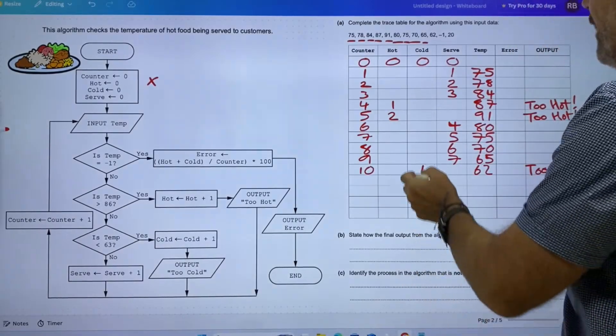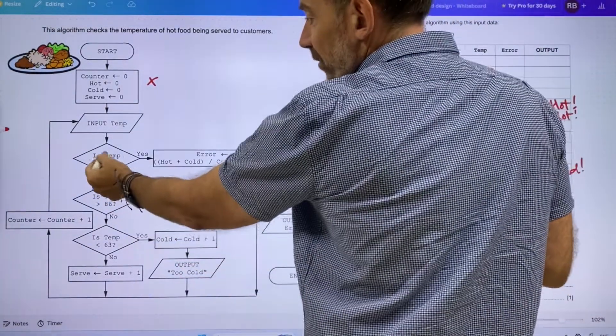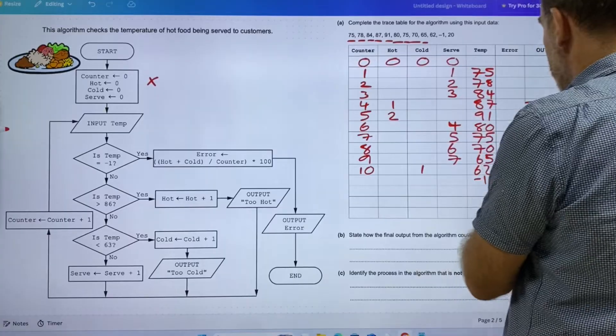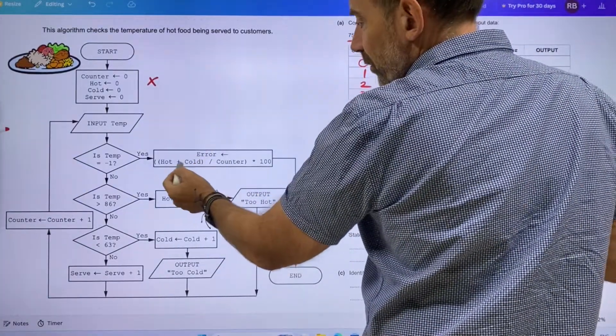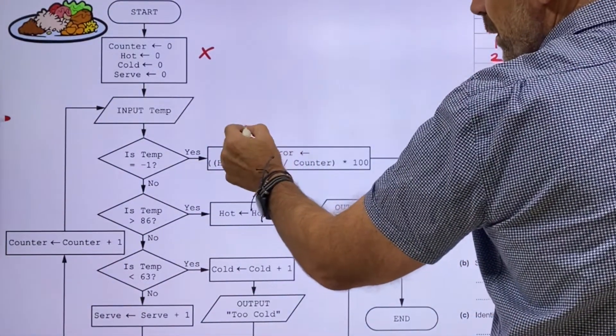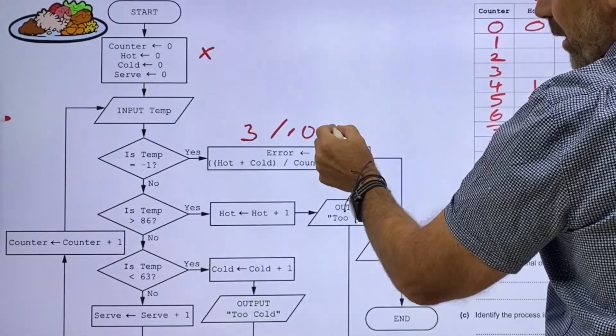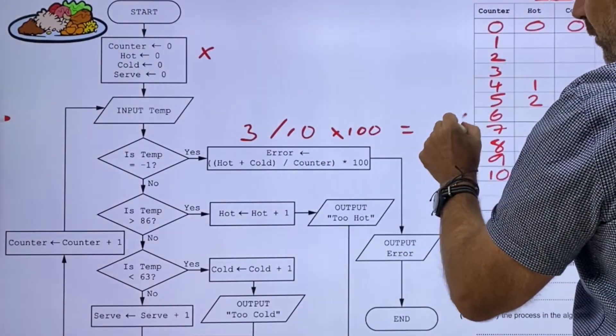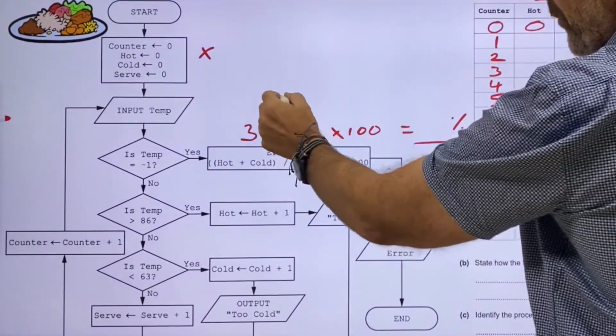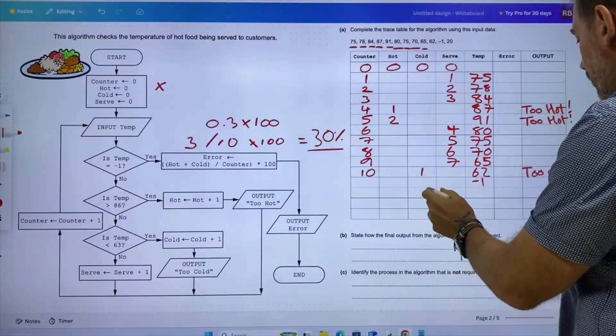And then finally, input temperature minus one. What's that going to do? Is the temperature equal to minus one? Oh my word, we've got an error value. We've got error down here. Error equals cold plus cold two plus one, which is three divided by the counter, which is 10, times 100. I think we've got a percentage. What's the percentage?